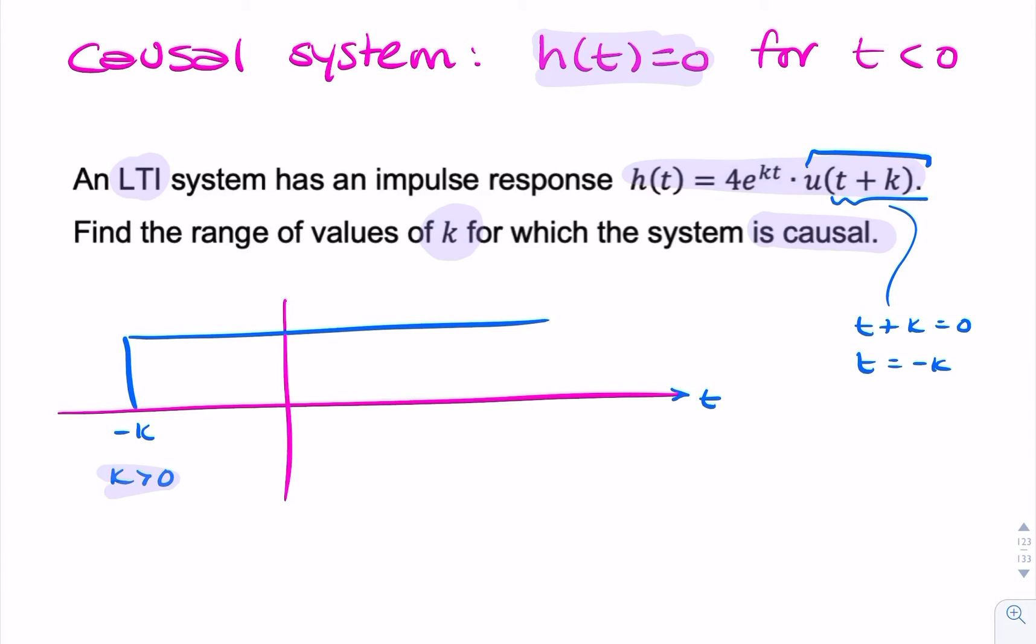Now, is that acceptable? Is that what we are expecting from a causal system? Remember, we said a causal system will have h of t zero for t less than zero. So for this side of the time axis, I expect to see zero. So, what we have here is no good for a causal system.